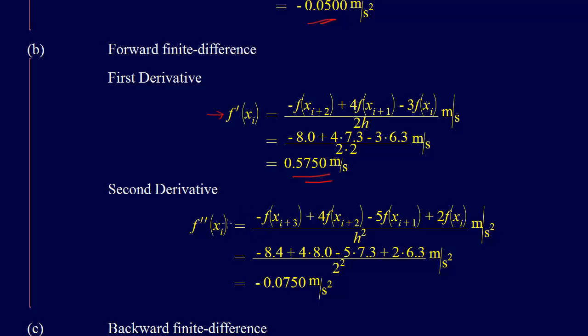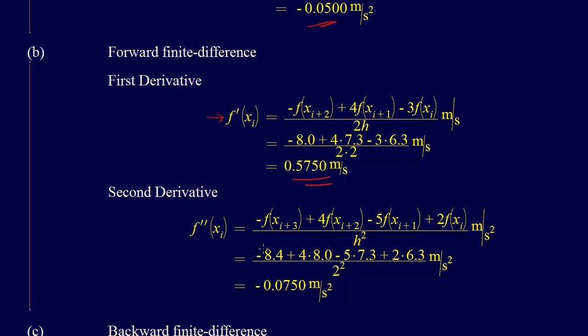For the second derivative, the equation has to be accurate to h squared, so that's the second formula on the list. It's minus f at xi plus 3, plus 4 f at xi plus 2, minus 5 xi plus 1, plus 2 f at xi. So we're going to have minus 8.4 plus 4 times 8.0 minus 5 times 7.3 plus 2 times 6.3.